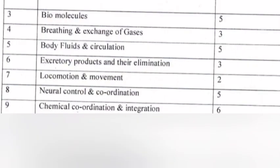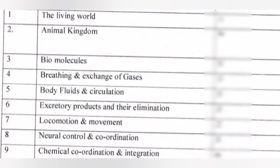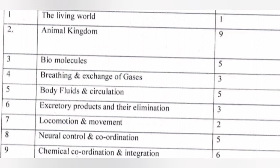Chapter eight - Neural Control and Coordination, five marks. Chapter nine - Chemical Coordination and Integration, six marks. High-mark zoology chapters: Chemical Coordination and Integration, six marks. Biomolecules, Body Fluids and Circulation, and Neural Control and Coordination, five marks each. Breathing and Exchange of Gases and Excretory Products and Their Elimination, three marks each.